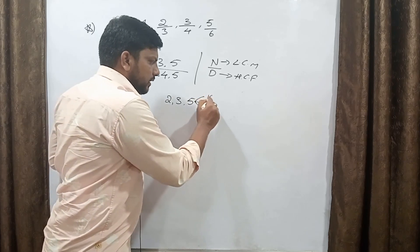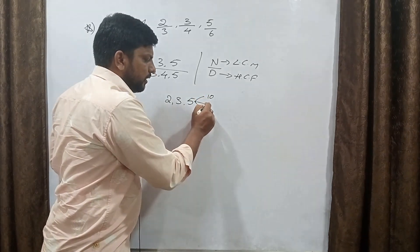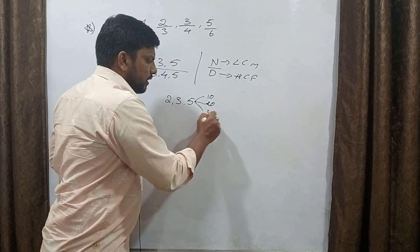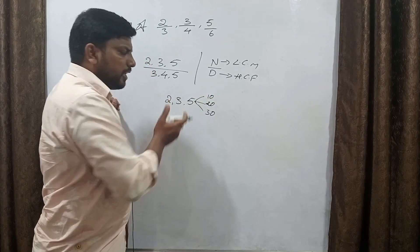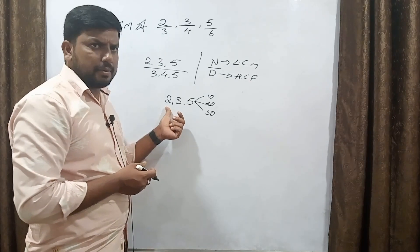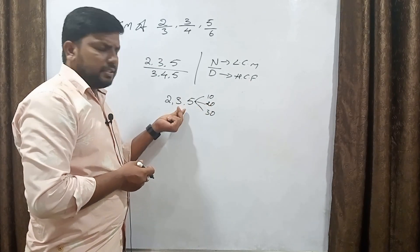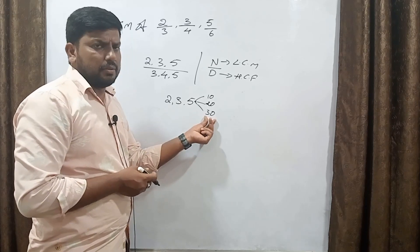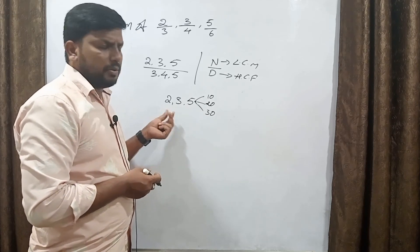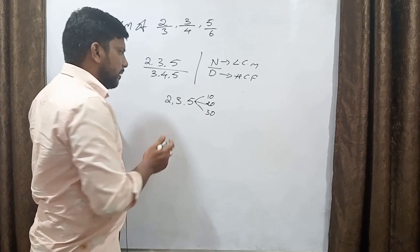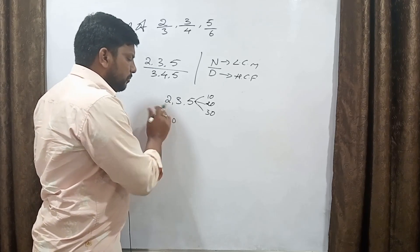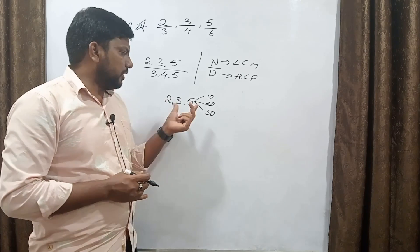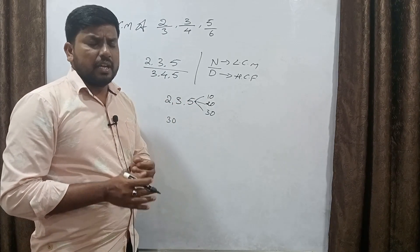5 times 2 is 10, 5 times 4 is 20, and 5 times 6 is 30. So 10, checking the 3 and 2 tables; 20, checking the 3 and 2 tables; remaining 30 — 30 is the LCM.